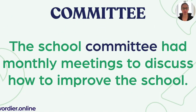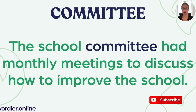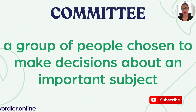Next: 'committee.' The school committee had monthly meetings to discuss how to improve the school. A committee is when people come together to discuss something important. The people on a committee usually need to be elected — voted for — in order to hold that position. A school committee might include teachers, parents, or people from the community. The definition: a group of people chosen to make decisions about an important subject.